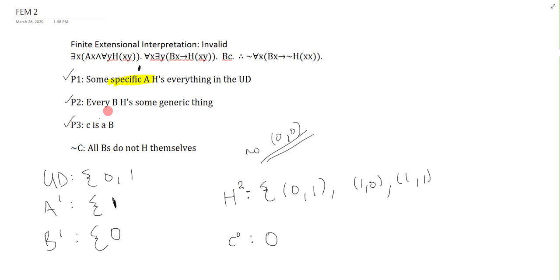Now, premise 1 is true. Premise 2 is still true. Every B H is some generic thing. 0 does H 1. C is a B. That's trivially true. And all Bs do not H themselves. I made that true by making sure there's no 0, 0. If I added other things to A and B, it might sort of screw this up. So the best thing to do now is just close it. I've satisfied everything so that all three premises are true. And the negation of the conclusion is true, which of course means the original conclusion is false. I have indeed shown invalidity.